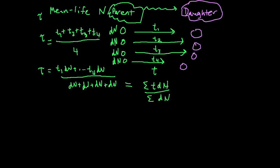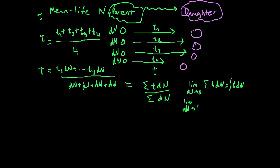We know there are going to be more than four different dn's, more than four atoms, so if I want to look at all the atoms I can rewrite this as a sum. I write the sum of t·dn over the sum of dn. And we can turn this into an integral if we let the limit as dn approaches zero — which makes sense because we're dealing with an atom, which is obviously very, very small. So our mean life equals the integral of t·dn over the integral of dn.